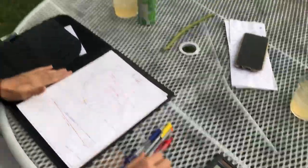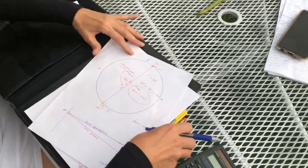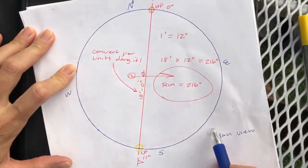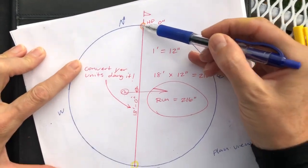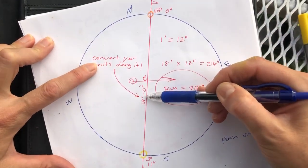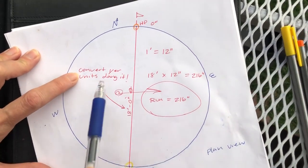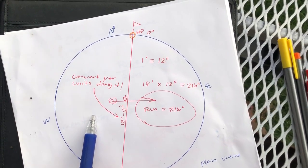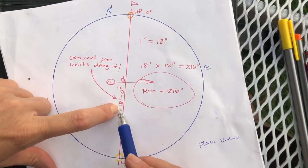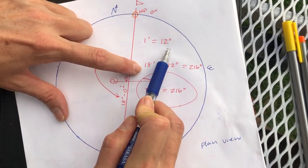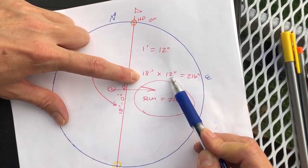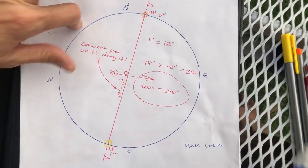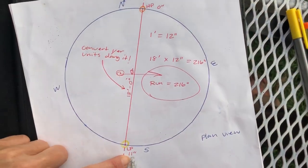Okay, let's look here. This blue circle represents our 18-foot excavation. The diameter is 18 feet 0 inches. You've got to convert your units — because I have an 11-inch rise, I need my run in inches as well. One foot equals 12 inches; 18 feet times 12 inches equals 216 inches. So my run is 216 inches, my high point is 0 inches, and my low point is 11 inches.